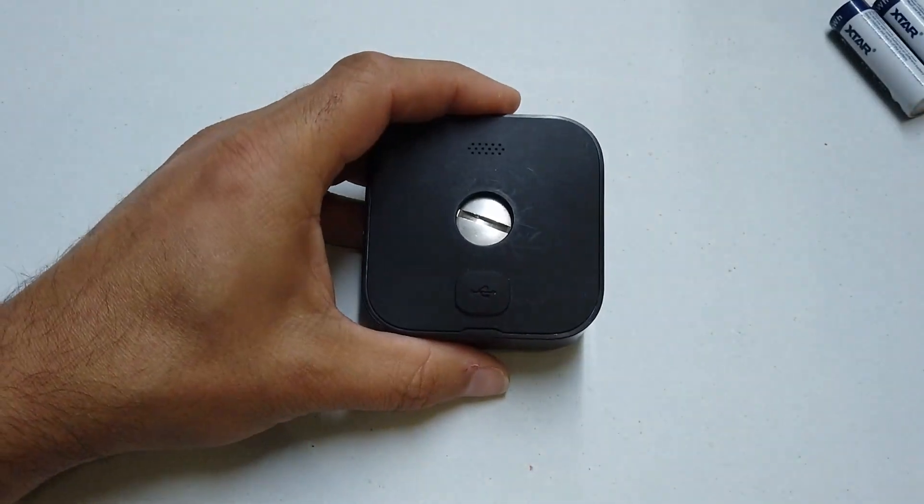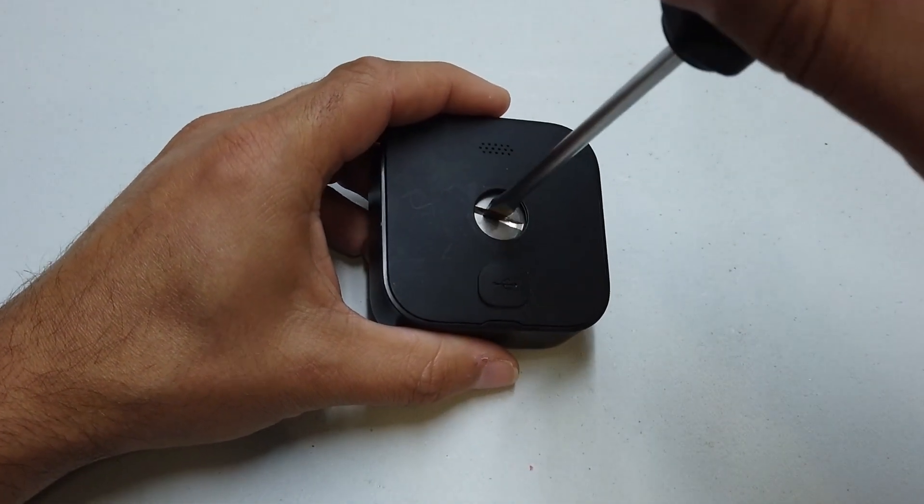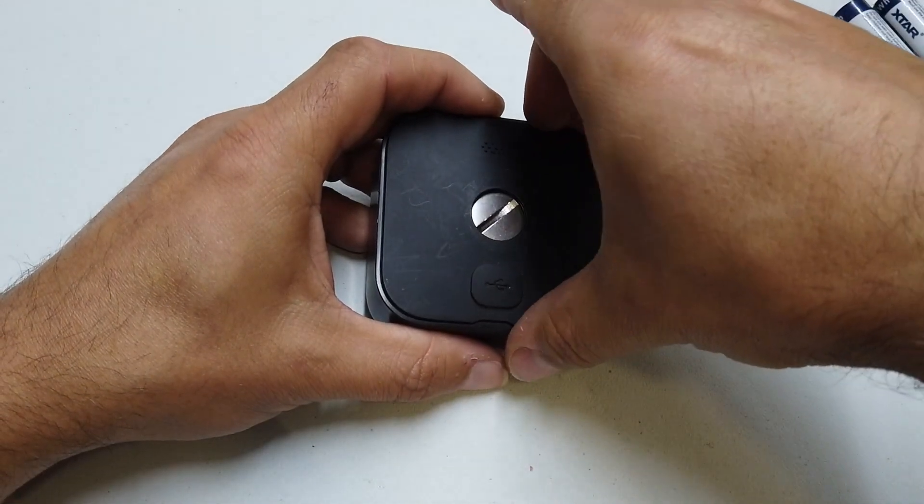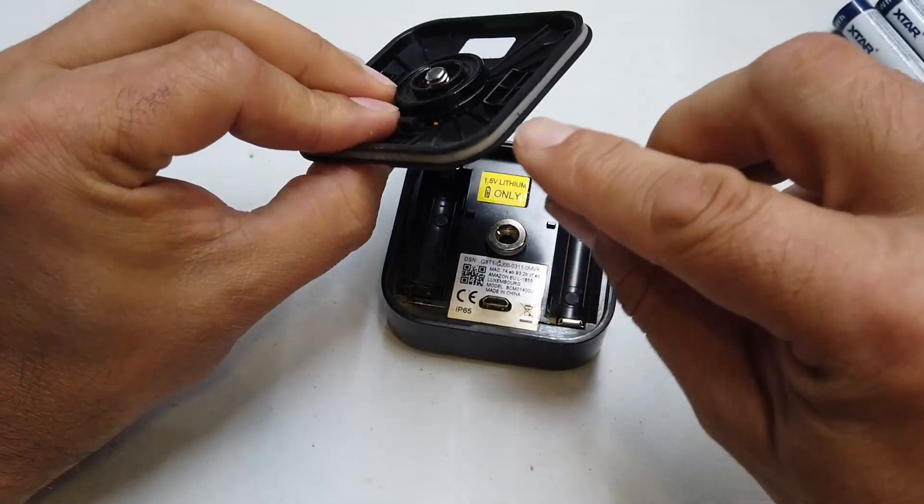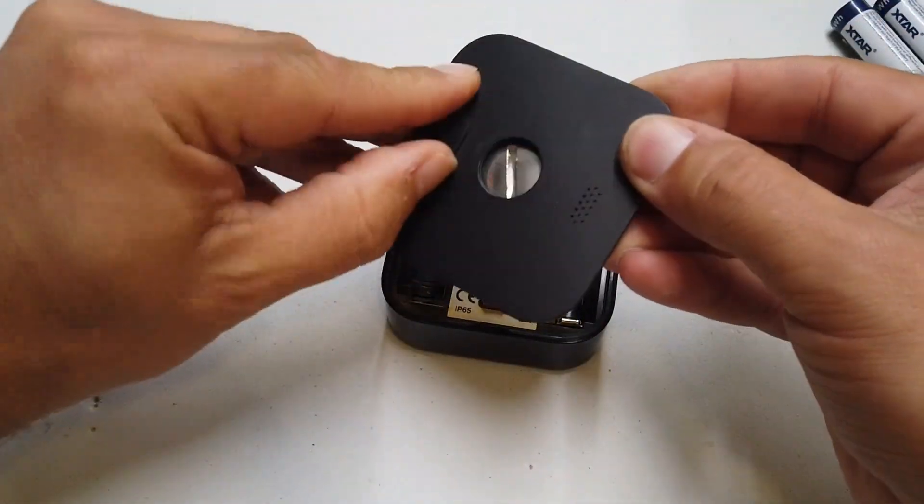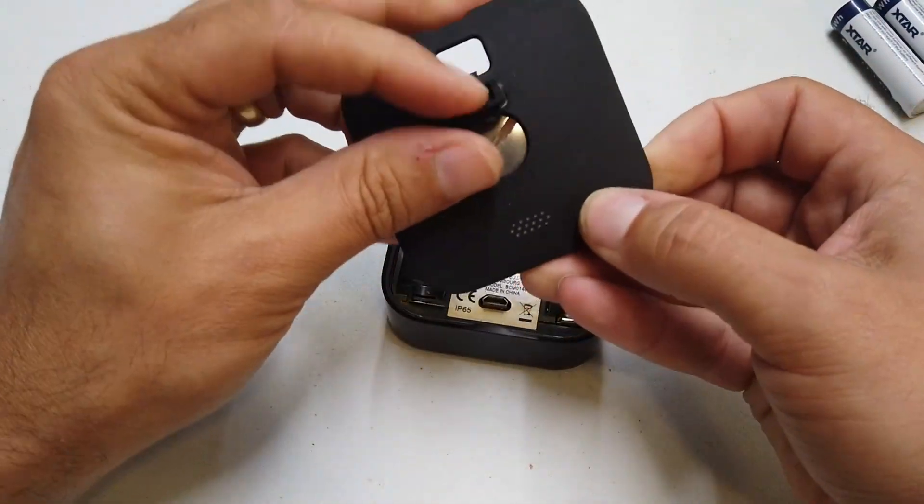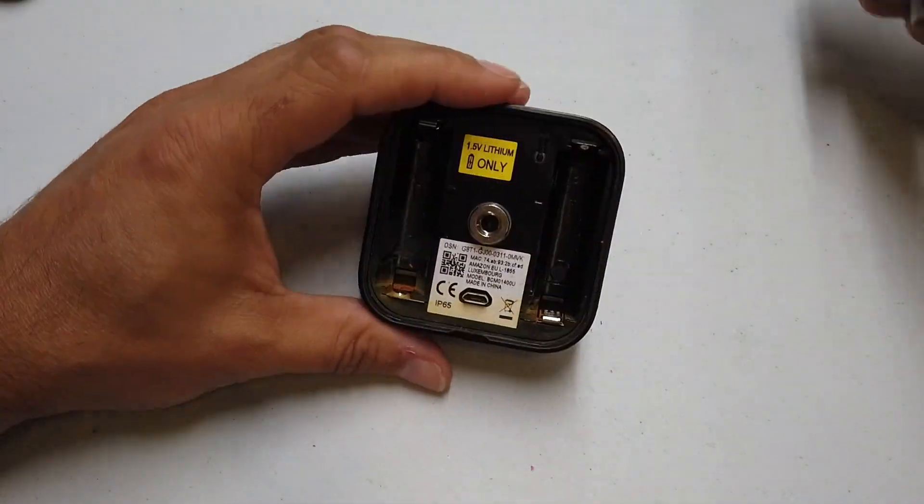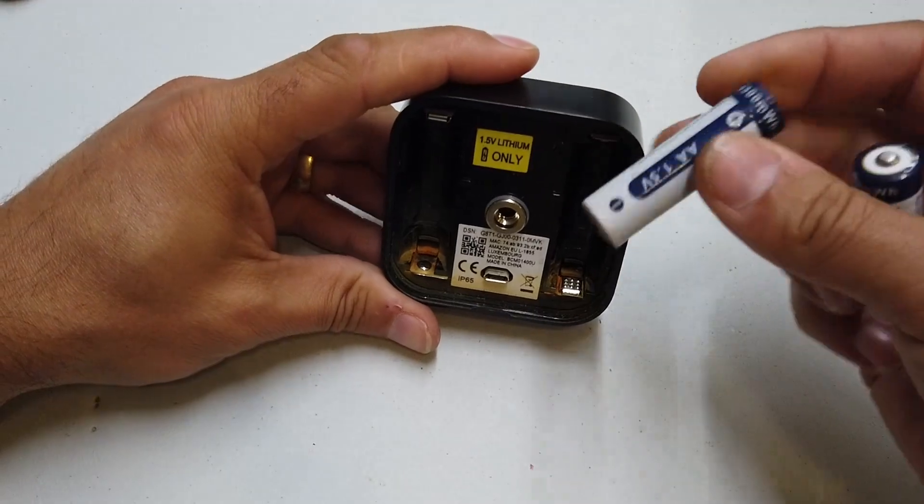All of a sudden, for whatever reason, bearing in mind this Blink camera is sealed, it's got a nice rubber seal around the outside of it here, rubber sheaths over all of the ports and whatnot. But have a look in here, look what happened. These batteries didn't do very well outside in the Blink camera.